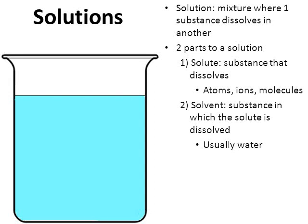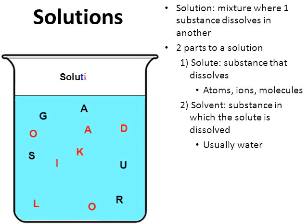The other part of a solution is called a solvent — it's the substance that is causing the solute to dissolve, and that's usually going to be water. Water is pretty much our universal solvent. Here we have sugar mixed with Kool-Aid in a container of water — you stir it all together, and the sugar and the Kool-Aid dissolve. You have a sweet, sugary drink from your childhood. Kool-Aid and lemonade and Crystal Light are great examples of solutions.